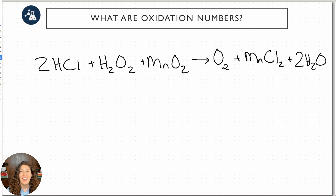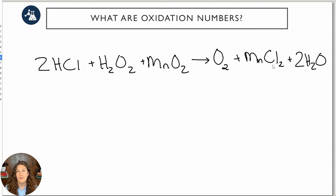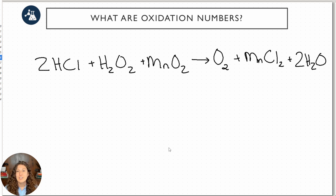This is going to be a complex oxidation number assignment, but let's get lots of practice with these rules. Before assigning oxidation numbers, the first step is always to make sure you have a balanced reaction. We do have a balanced reaction here — four hydrogens on each side, four oxygens and four oxygens, one manganese, and two chlorines. Make sure all atoms add up equally on both sides; otherwise, balance the reaction first.